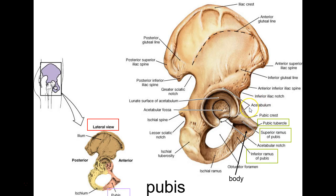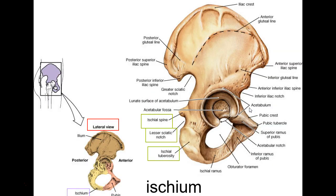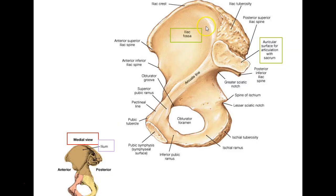Flipping to the other side: the iliac fossa is sixteen, arcuate line seventeen, auricular surface eighteen, and the pubic symphysis is technically nineteen. So there are about nineteen landmarks on the coxal bone.